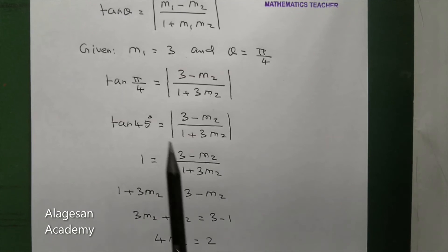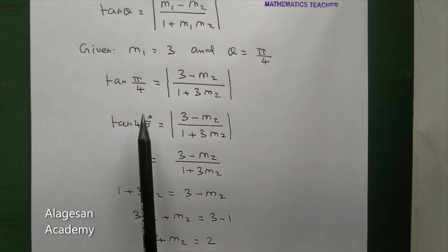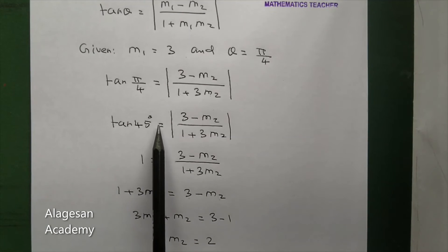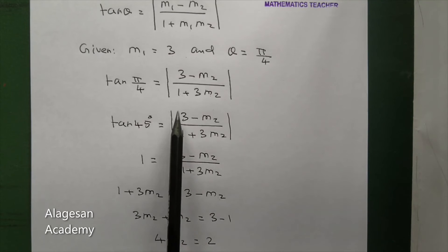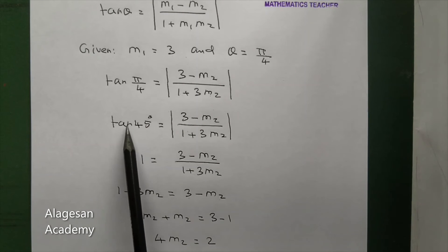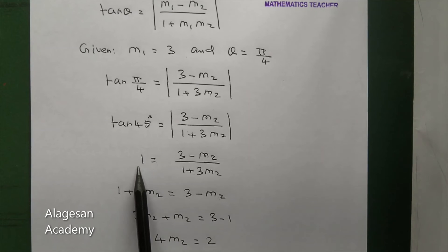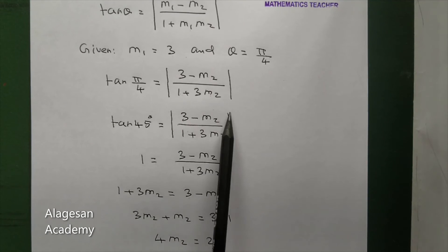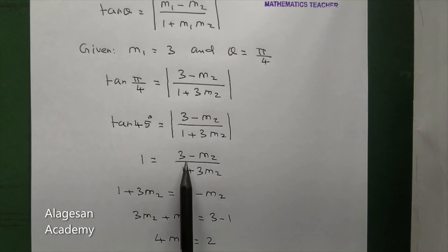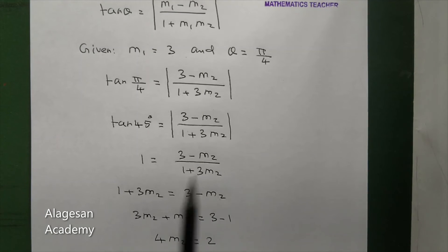Now, tan(π/4) means tan 45 degrees. Tan 45 degrees is equal to 1. So we get: 1 equal to modulus of 3 minus M2 divided by 1 plus 3·M2.